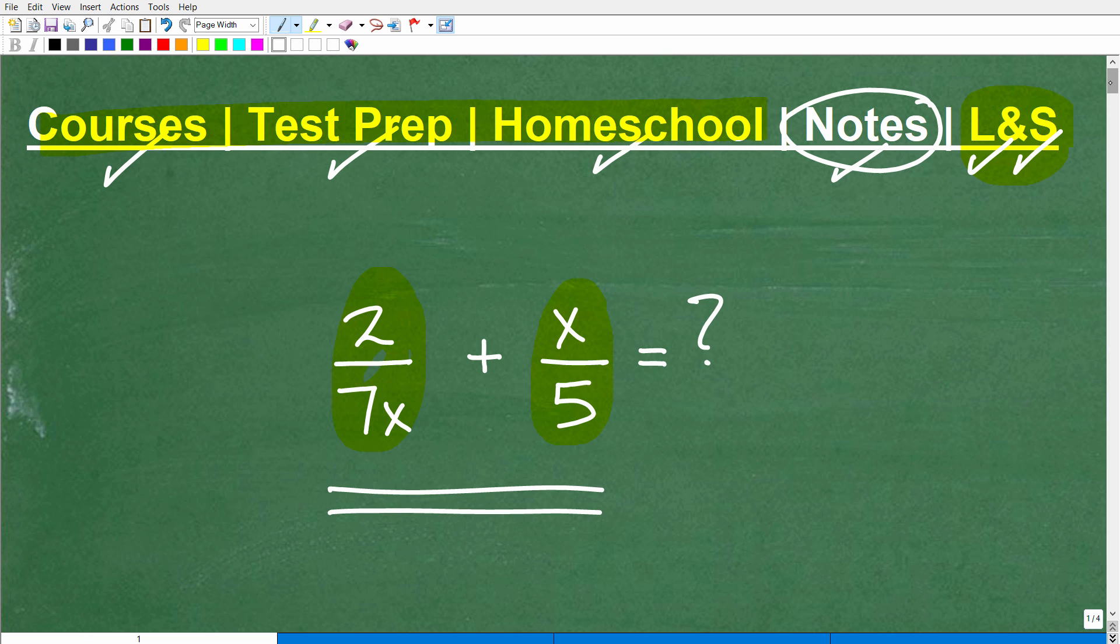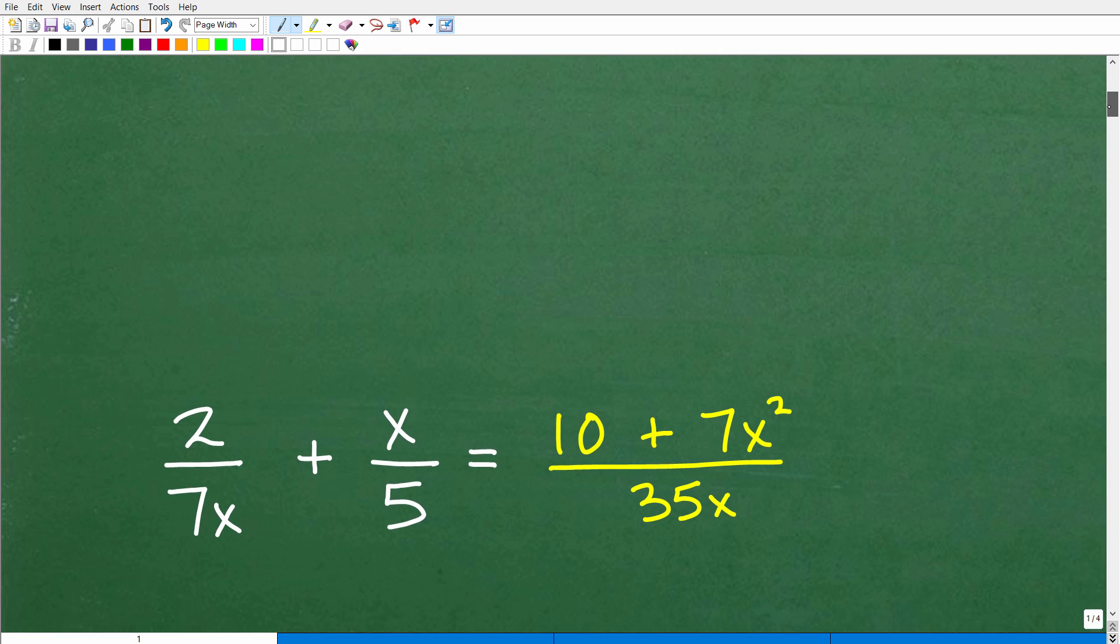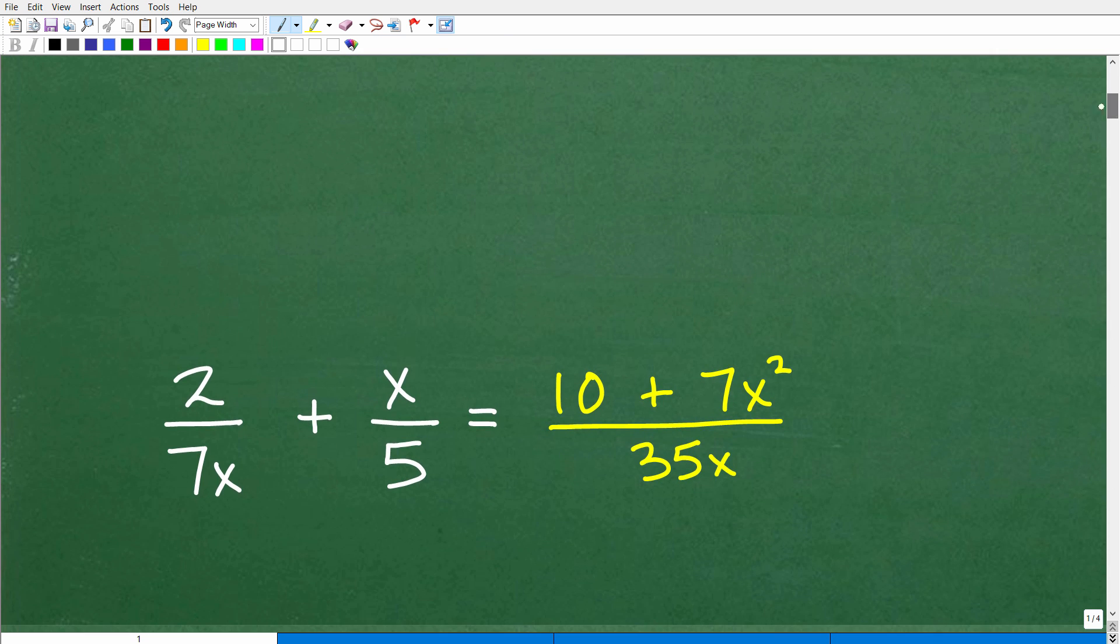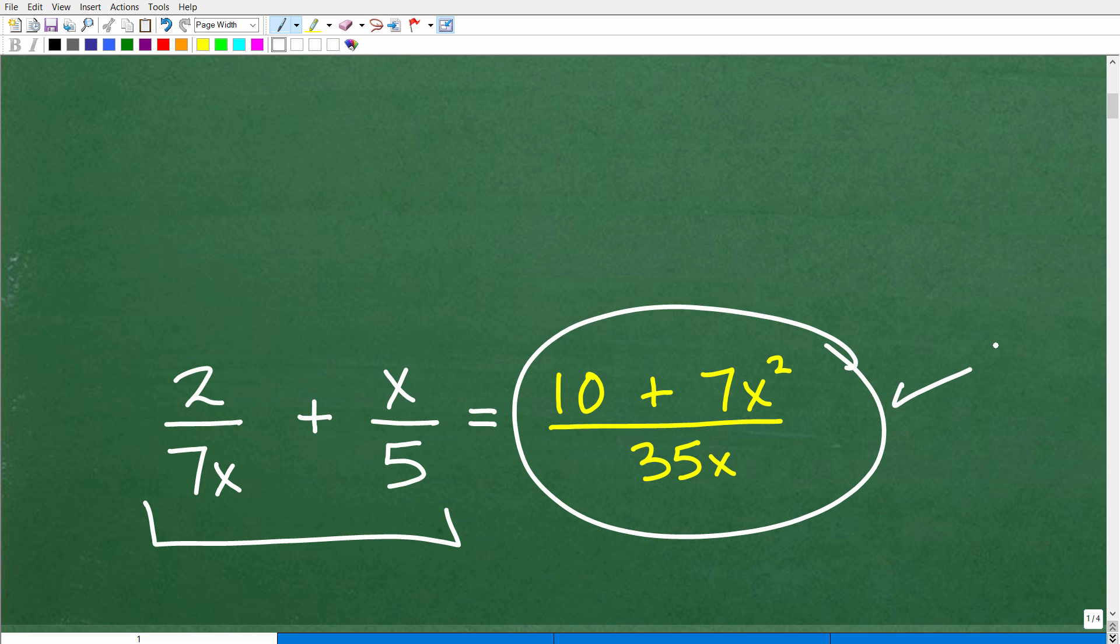Okay, so let's go ahead and take a look at the answer here, and then we will talk about two ways to find the correct solution. So 2 over 7x plus x over 5, if we add up these rational expressions, we get this as our answer: 10 plus 7x squared over 35x. Now if you had 7x squared over here plus 10, it doesn't make a difference in terms of order here, but 35x is definitely the denominator.